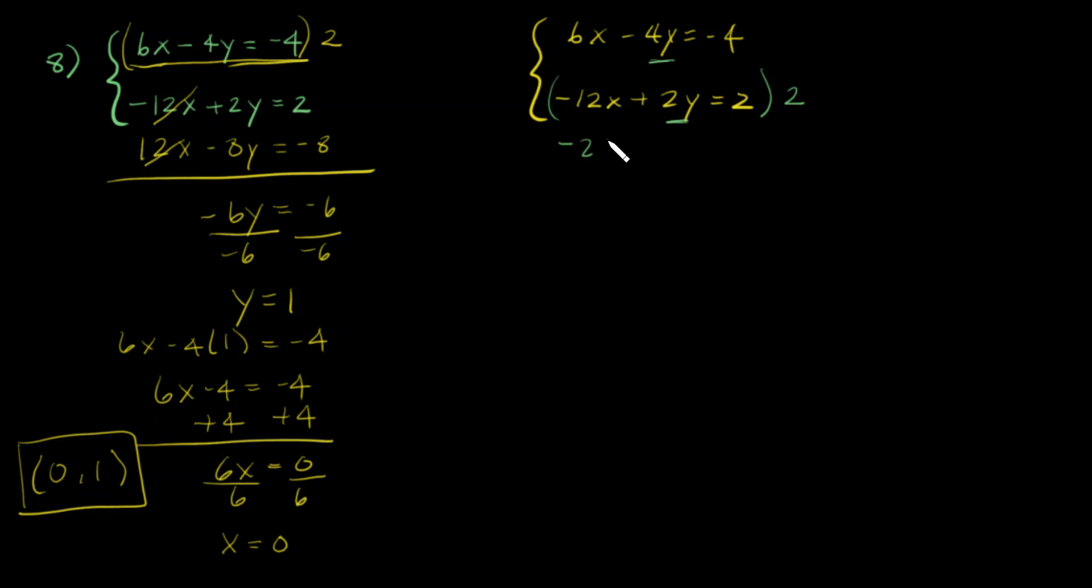So we have -24x + 4y = 4, and bring the second equation underneath that. We're gonna add the two, so we have -24 + 6, which is -18x. We have a positive 4y and a negative 4y, that's going to give you a 0.